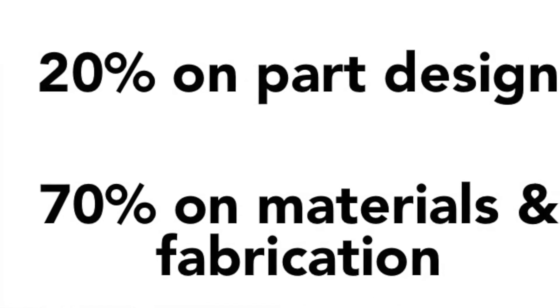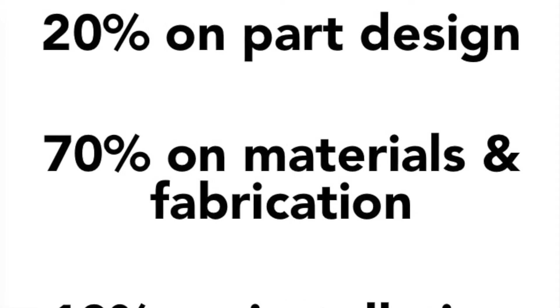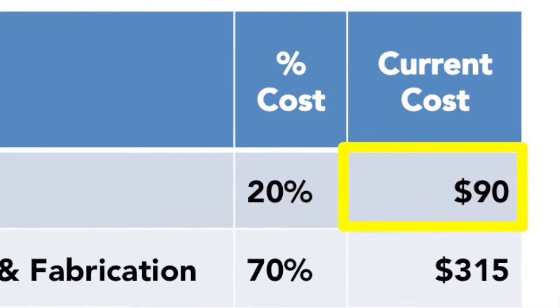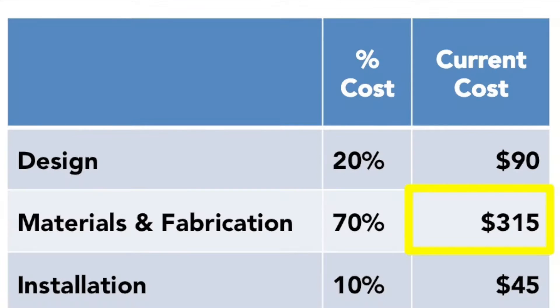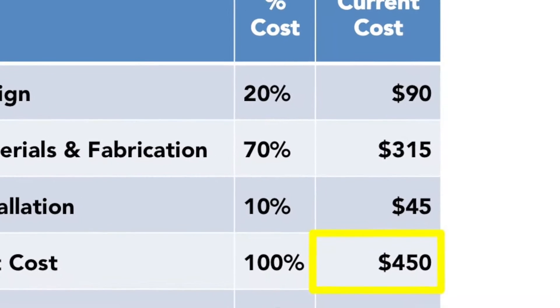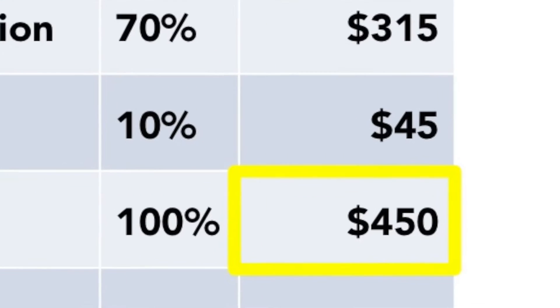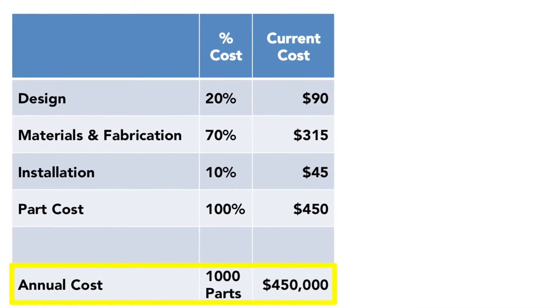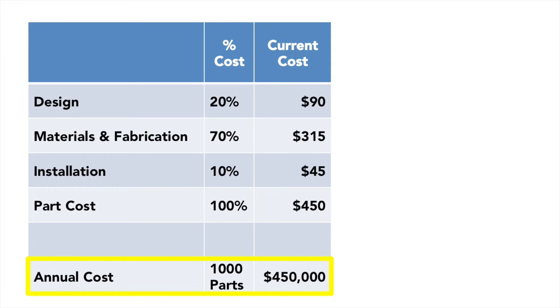Materials and fabrication are approximately 70%, and installation is about 10%. The current cost summary includes approximately $90 for design, $315 for materials and fabrication, and about $45 for installation, for a total part cost of $450 and a total annual cost of $450,000 for 1,000 parts.